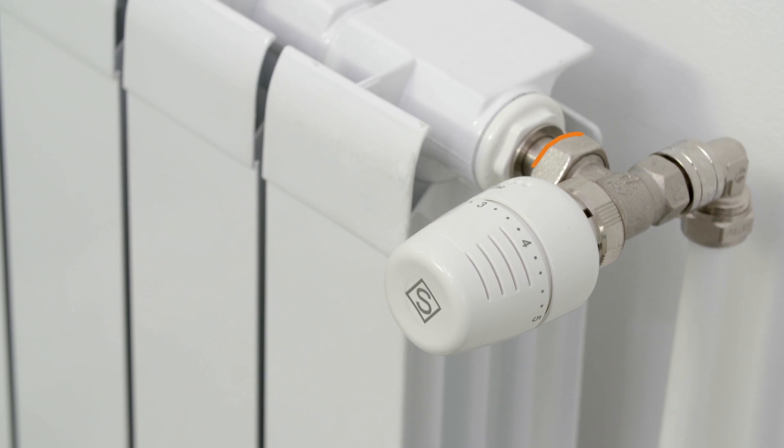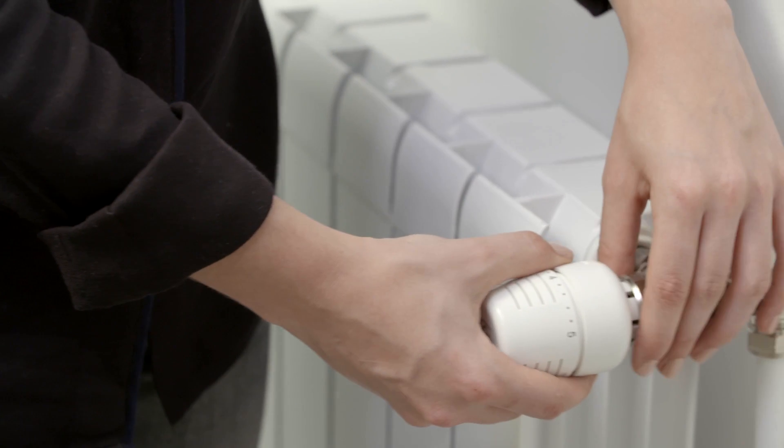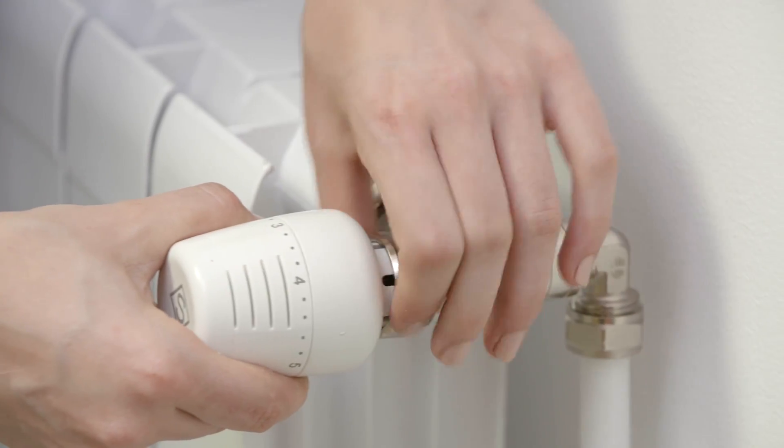A thermostatic radiator valve is fixed onto a metal valve body. It can be unscrewed most of the time using your hands without the need for any tool.